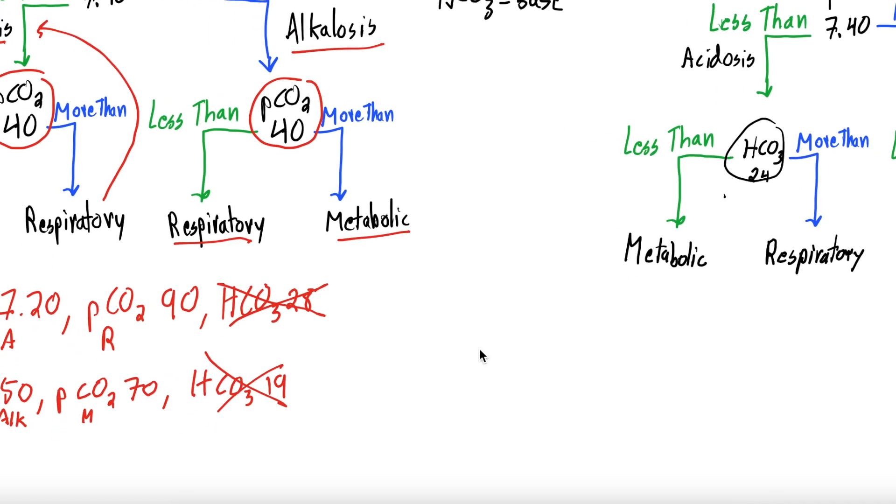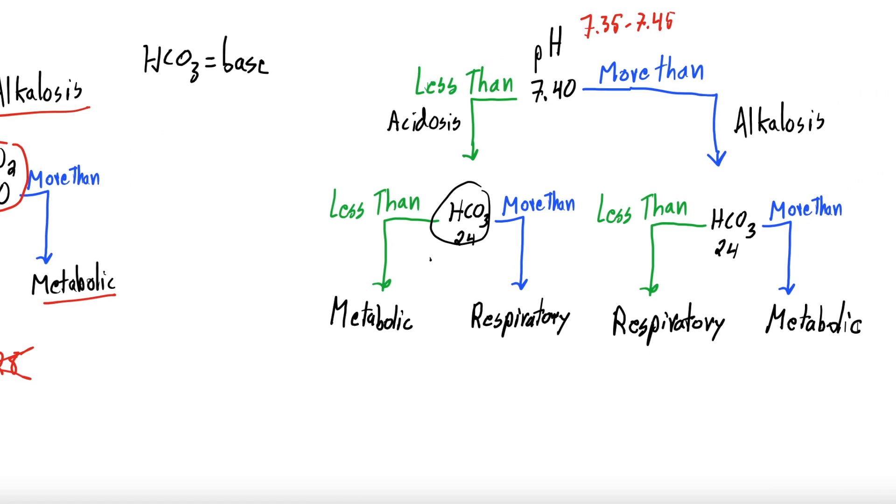So just like we did over there, let's say the pH is 7.20 - that is less than 7.4, so you have an acidosis. And your PCO2, which we're going to ignore in this case, is 70, and your bicarb is - let's call it, actually let's do this different - the PCO2 is going to be 50, and your bicarb is 14. So if we go down here, pH is 7.40, 7.2 is less than - acidosis. Bicarb of 24, 14 is less than, so this is a metabolic acidosis, because the amount of bicarb or the amount of base is low, meaning the low bicarb is causing the acidosis.